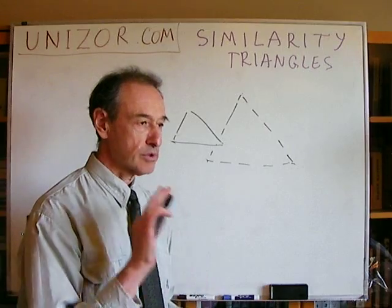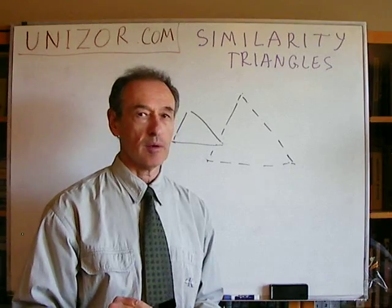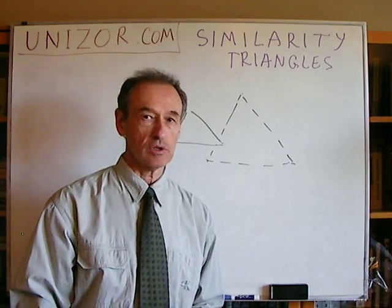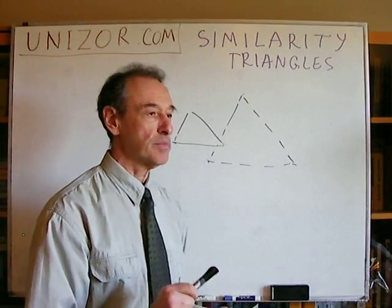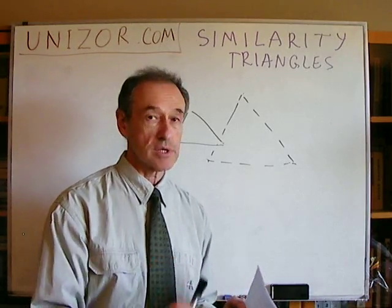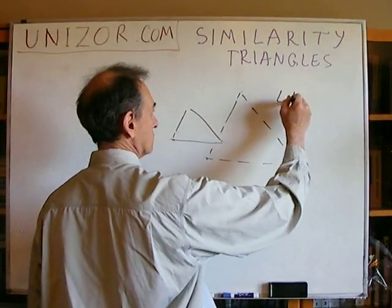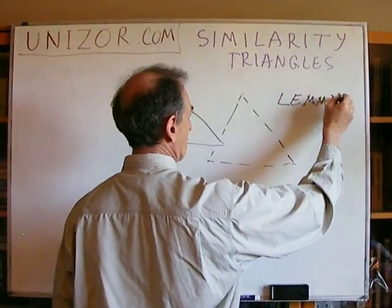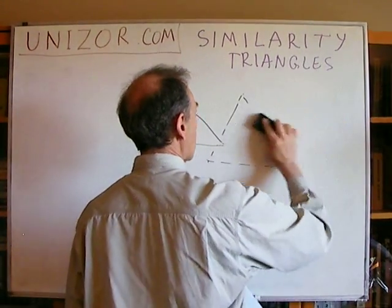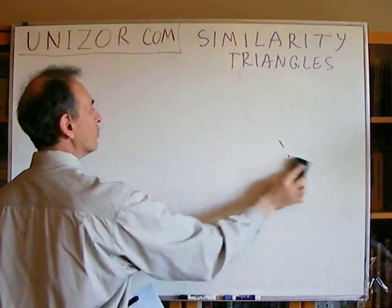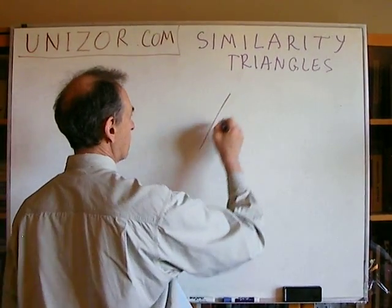So we have three different theorems, each one stating some kind of condition sufficient for similarity, and I'm going to prove them one after another. However, before doing that, I will prove an auxiliary theorem called a lemma. Using this lemma I will prove each one of those three theorems. So what is this lemma? If you have a triangle and a point somewhere on one side, and a line parallel to the base...